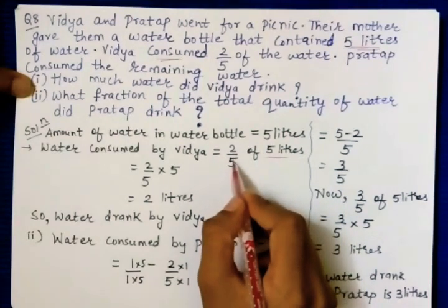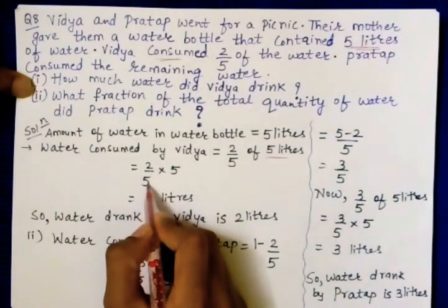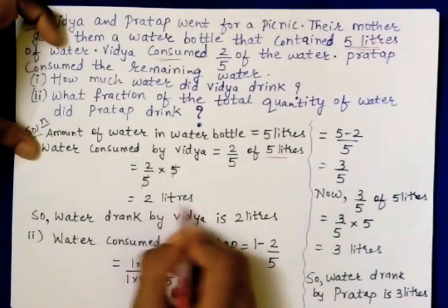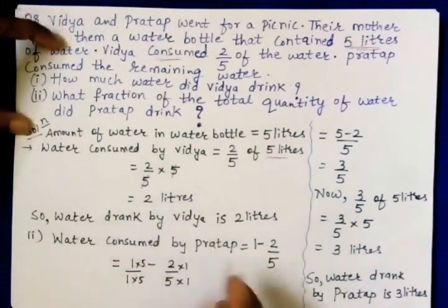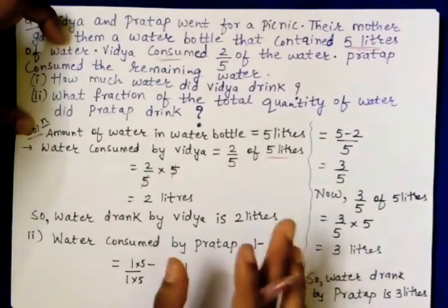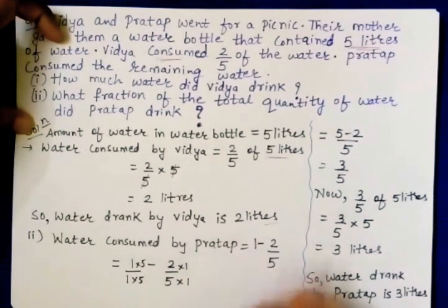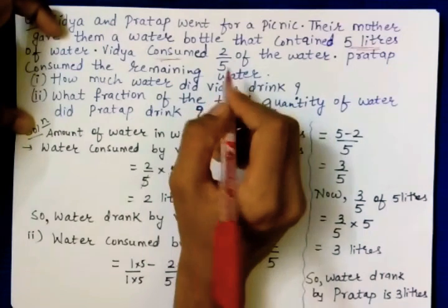Now for Pratap: since only one fraction is given, we subtract from 1. Water consumed by Pratap equals 1 minus two-fifths. Writing 1 as 1 upon 1, taking LCM of 1 and 5 which is 5: multiply numerator of first fraction by 5 giving 5 upon 5, minus 2 upon 5. So five minus two upon 5 equals 3 upon 5. Pratap drank 3 upon 5 of 5 liters. Three-fifths into 5, five and five cancel — Pratap drank 3 liters.